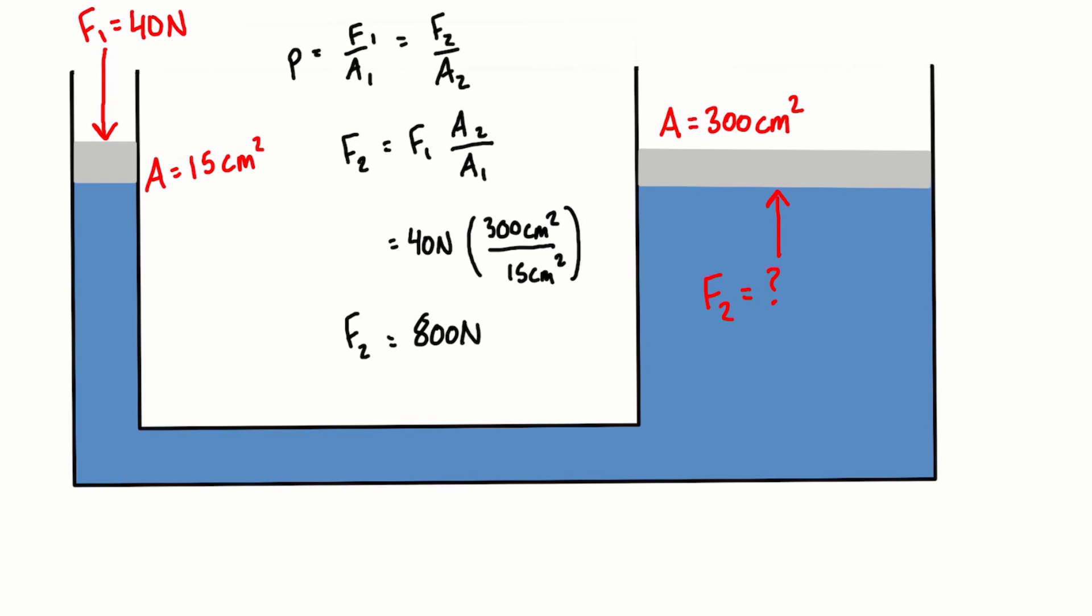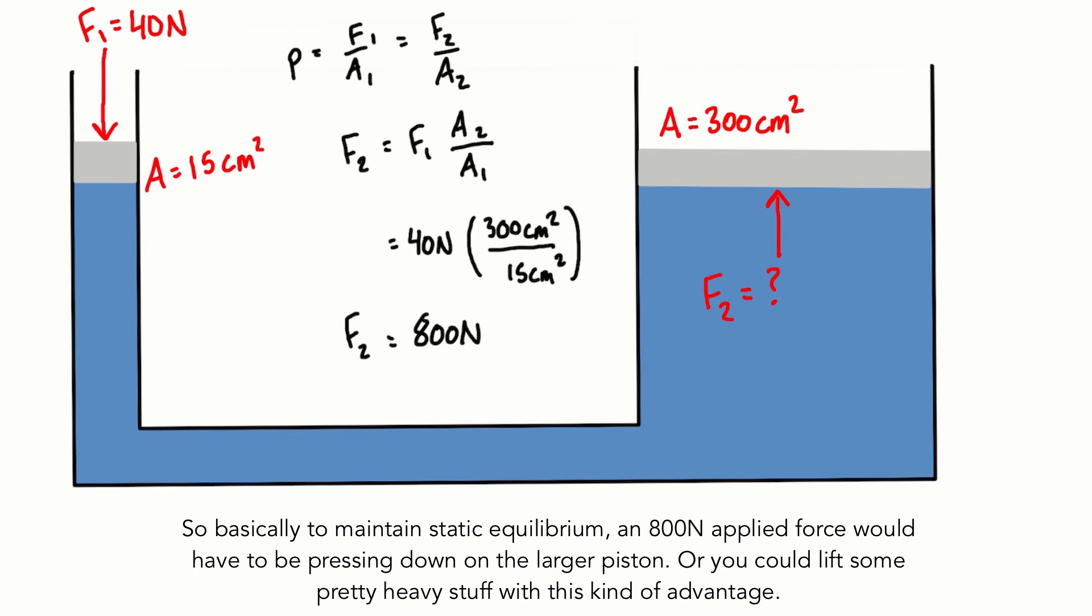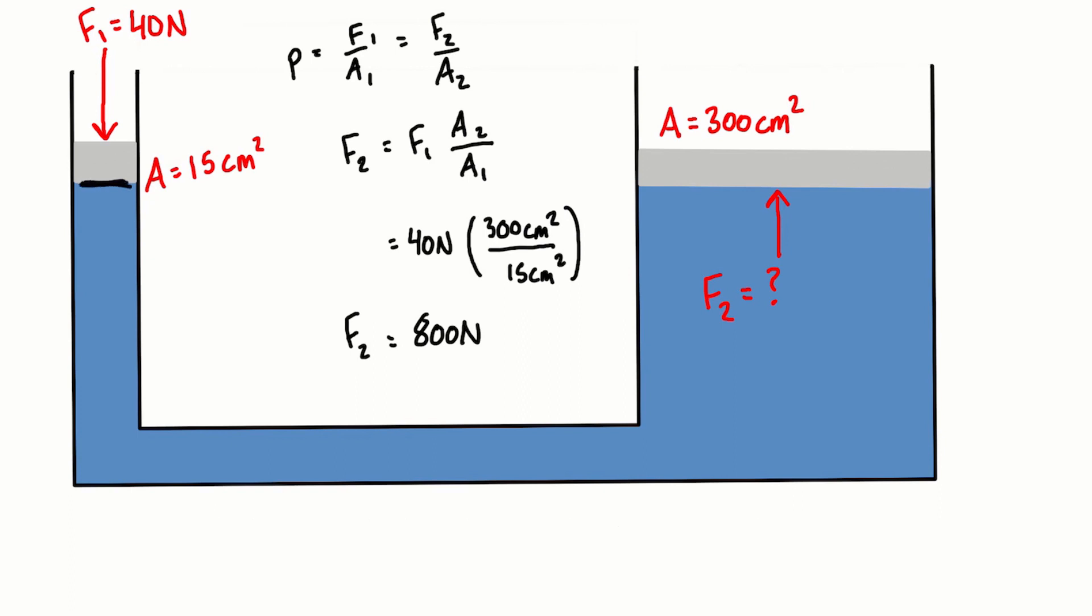So because of the geometry of this hydraulic lift we've actually magnified the force from 40 newtons all the way up to 800 newtons in this system. We can check the pressure at each surface, so being the surface of the piston on the left side and also the surface of the piston on the right side. So let's just quickly check that.